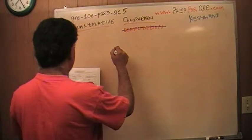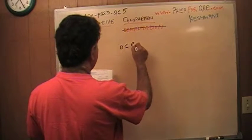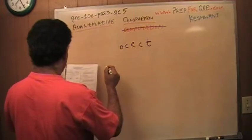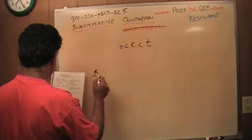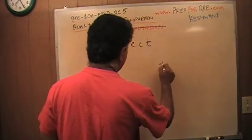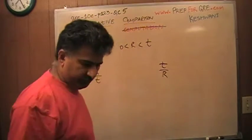We are told that zero is less than r which is less than t, and then we are asked to compare r over t versus t over r. Let's see which quantity is bigger.